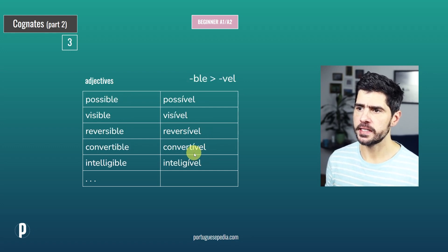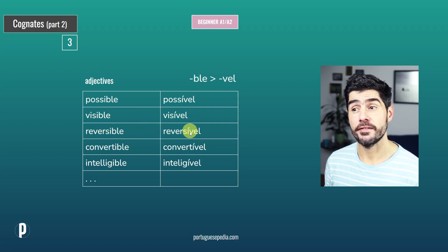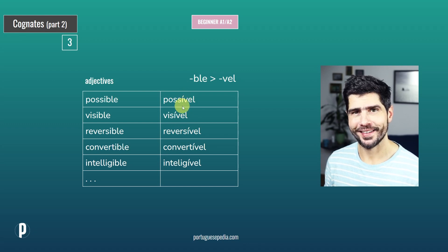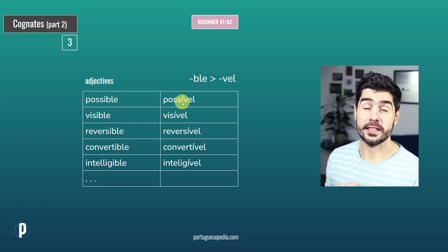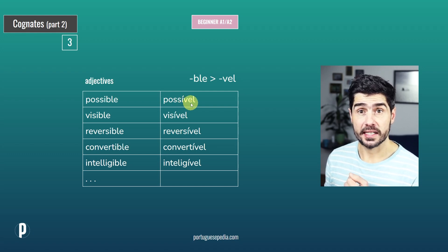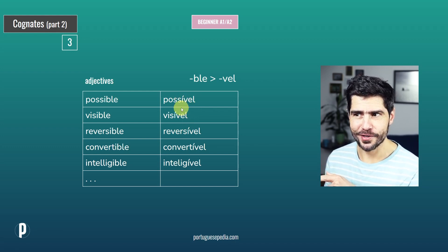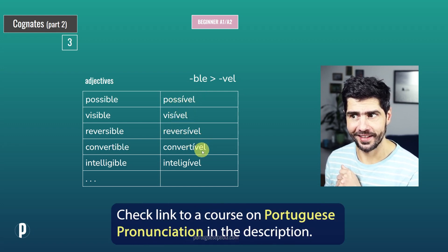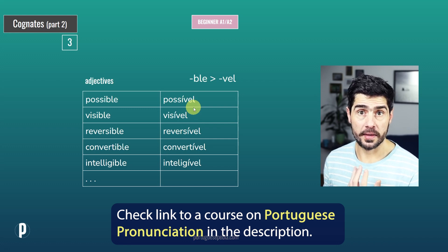Moving on, we have the suffix -BLE in English and -VEL in Portuguese. So possible — possível. Visible — visível. Reversible — reversível. The word stress here is quite obvious because we have the accent mark, and whenever you see an accent mark in Portuguese, you know it marks the stress. We need the accent mark here because otherwise words ending with L get the last syllable stressed — so without it you'd say possivel, visivel. The L is also this thicker sound.